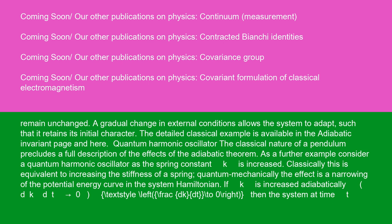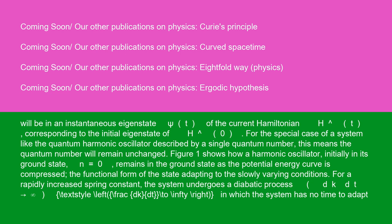Quantum harmonic oscillator: the classical nature of a pendulum precludes a full description of the effects of the adiabatic theorem. As a further example, consider a quantum harmonic oscillator as the spring constant k is increased. Classically, this is equivalent to increasing the stiffness of a spring. Quantum mechanically, the effect is a narrowing of the potential energy curve in the system Hamiltonian. If k is increased adiabatically (dk/dt → 0), then the system at time t will be in an instantaneous eigenstate psi(t) of the current Hamiltonian H-hat(t), corresponding to the initial eigenstate of H-hat(0). For a system described by a single quantum number, this means the quantum number will remain unchanged. Figure 1 shows a harmonic oscillator initially in its ground state (n=0) remaining in the ground state as the potential energy curve is compressed, with the functional form adapting to the slowly varying conditions.